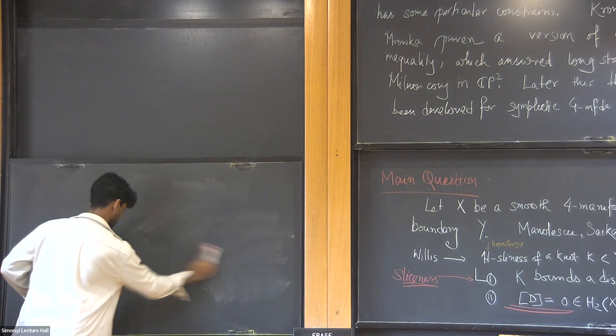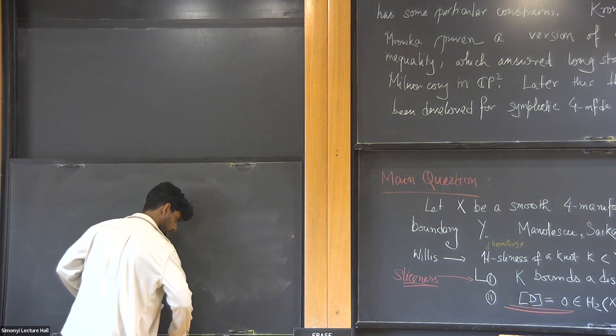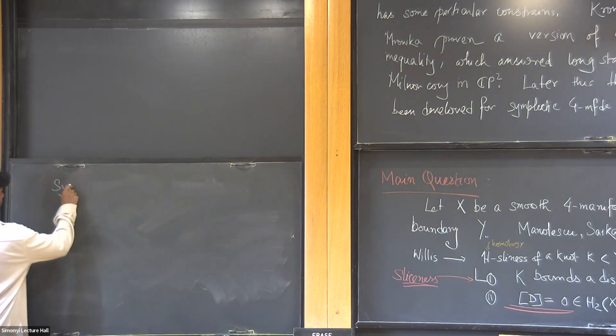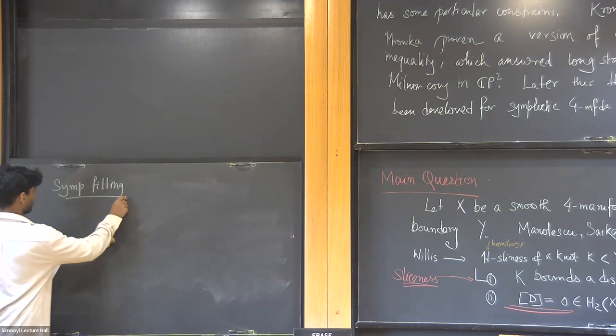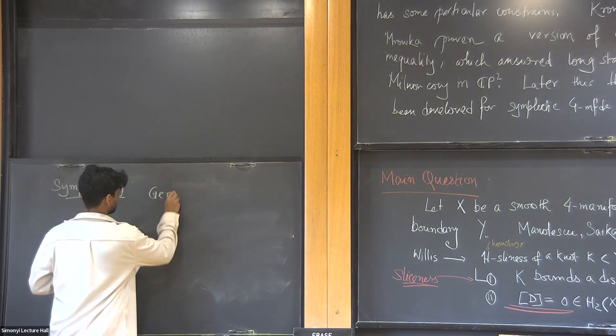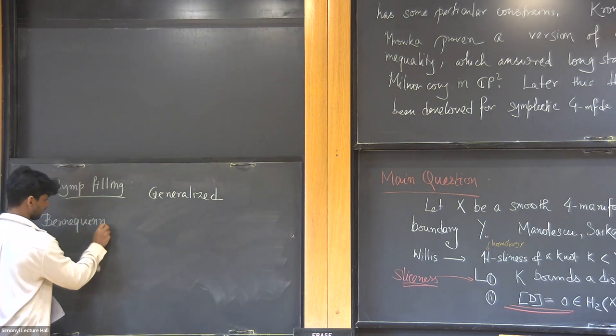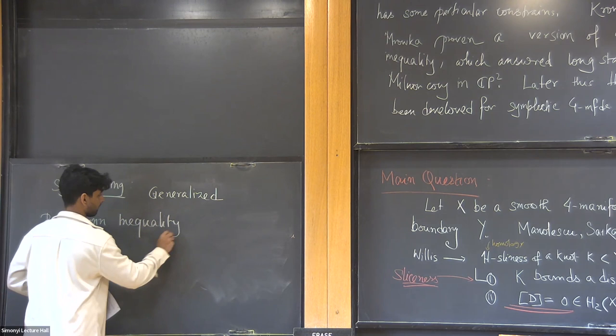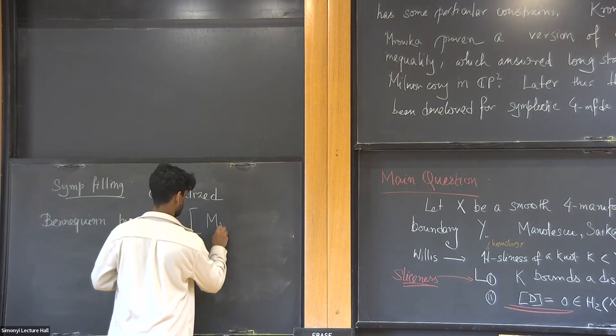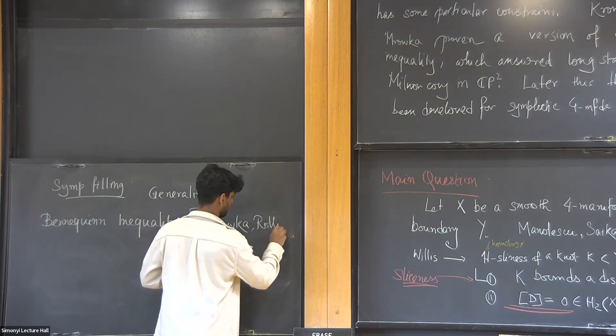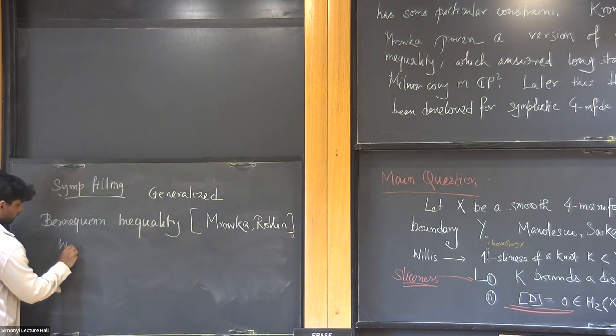For symplectic fillings we have a very strong inequality — the generalized Bennequin inequality, proven by Tom Mrowka and Rowan and others. If (W, ω) is a symplectic filling of (Y, ξ), and K is a Legendrian knot, then there is a strong constraint relating the topology of the filling to the knot invariants.